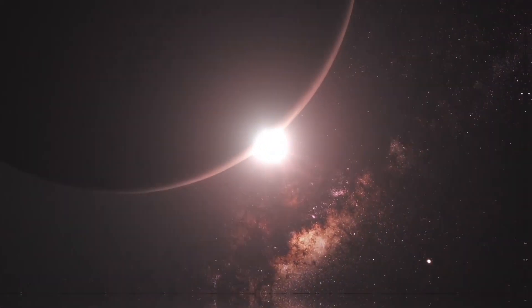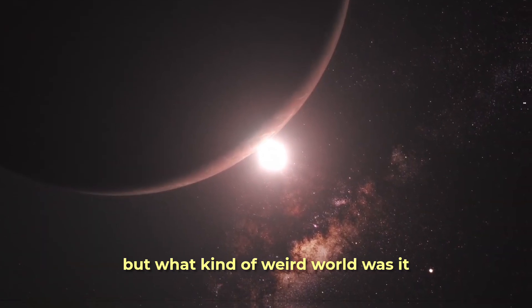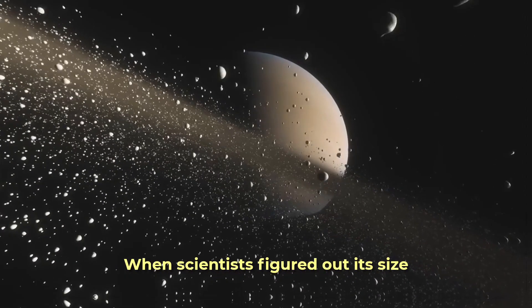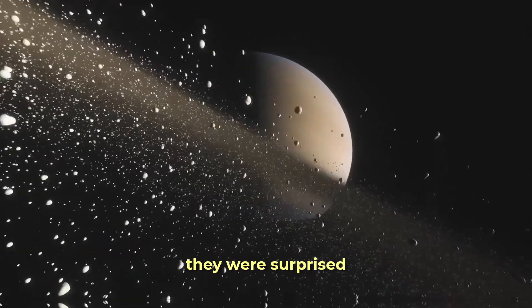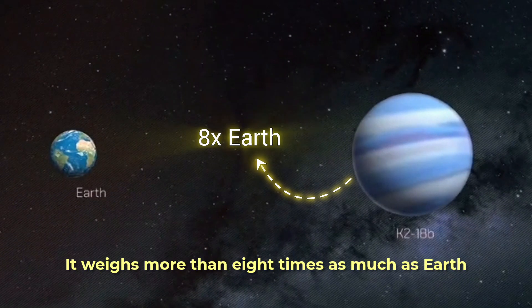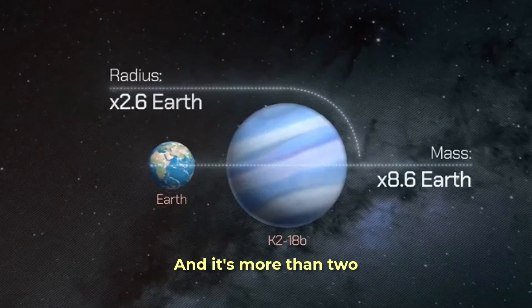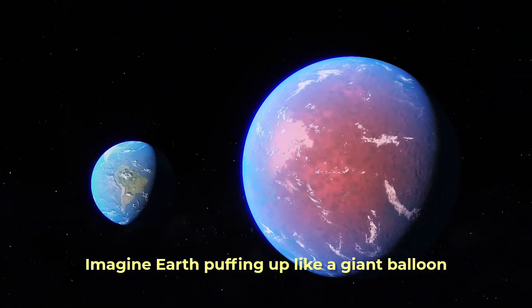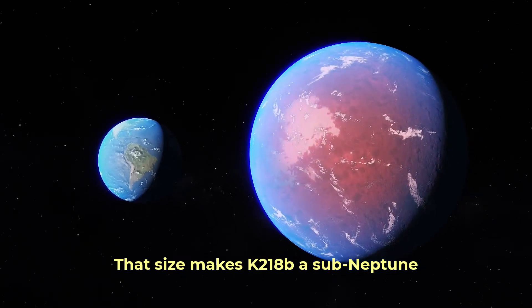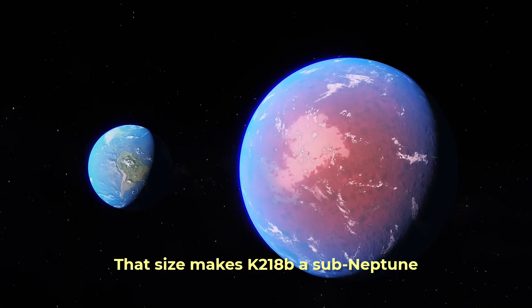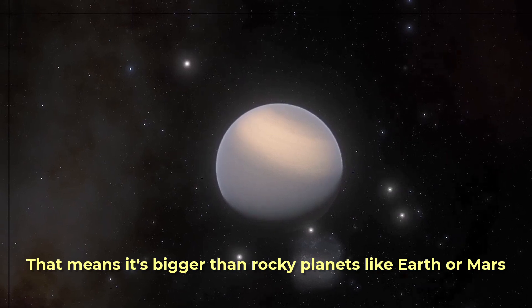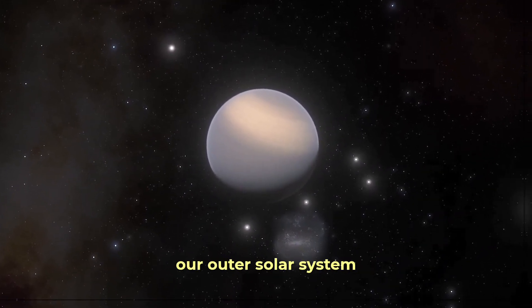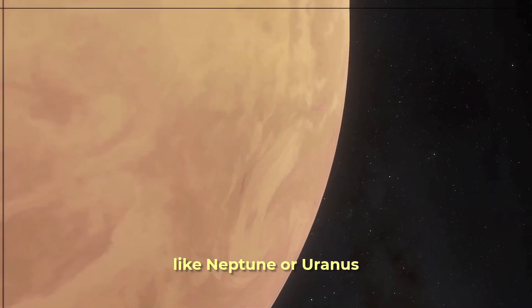So we found a planet. But what kind of weird world was it? K2-18b wasn't like Earth at all. When scientists figured out its size, they were surprised. It's huge. It weighs more than eight times as much as Earth and it's more than two and a half times wider. Imagine Earth puffing up like a giant balloon. That size makes K2-18b a sub-Neptune. That means it's bigger than rocky planets like Earth or Mars, but smaller than the giant ice planets in our outer solar system, like Neptune or Uranus.